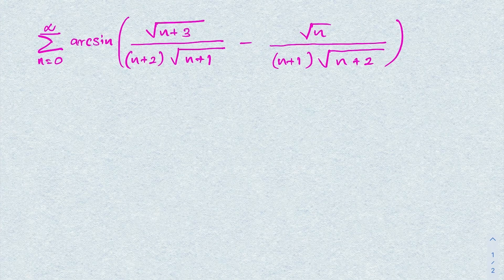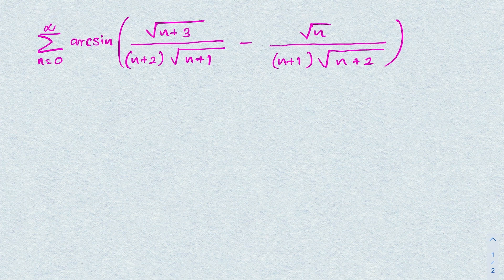Hello everyone, welcome to the Mathematics channel. In this video we are going to solve this nice infinite sum: the sum from zero to infinity of arcsin of square root of (n+3) over (n+2), times square root of (n+1) minus square root of n over (n+1) times square root of (n+2). How do we start?